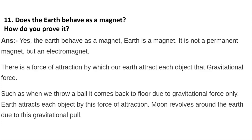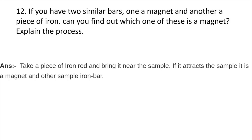Does the earth behave as a magnet? Yes, the earth behaves as a magnet. It is not a permanent magnet but an electromagnet. There is a gravitational force by which earth attracts every object — when we throw a ball, it comes back due to gravitational force. Moon revolves around the earth due to this gravitational pull. To identify a magnet from a piece of iron: bring an iron rod near the sample — if it attracts, that sample is the magnet; the other is the iron piece.